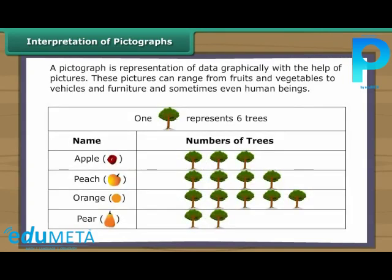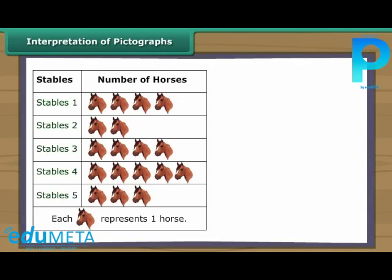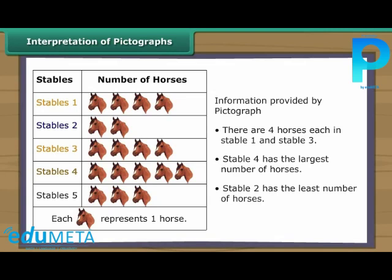Interpretation of pictographs. A pictograph is a representation of data graphically with the help of pictures. These pictures can range from fruits and vegetables to vehicles and furniture and sometimes even human beings. Look at this pictograph. It shows details of horses in five different stables in a village. Each picture of a horse represents one horse. There are four horses each in stable one and stable three. Stable four has the largest number of horses, and stable two has the least.